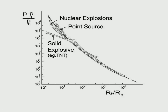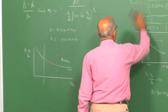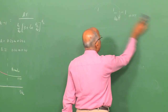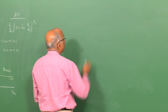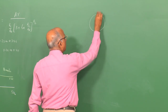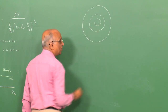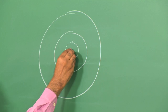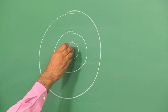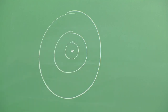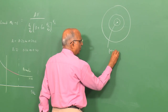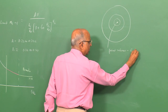Now let us qualify what we have done. All this scaling assumed energy is released at a point — we never even considered the dimensions of the source volume. We just assumed a wave gets generated, meaning we gave no credence to the volume; we said energy E0 joules is released at a point.